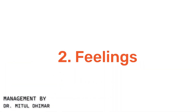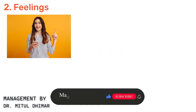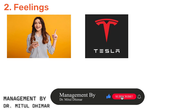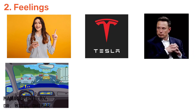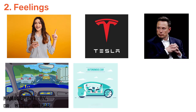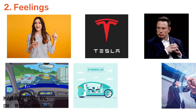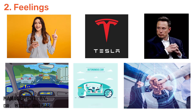Stage 2: Feelings. Now let's explore the feelings stage with an example from Tesla. When Elon Musk announced Tesla's ambitious goal to produce fully autonomous vehicles, emotions ran high within the company.